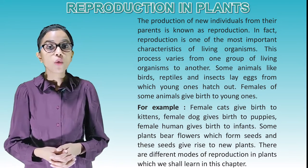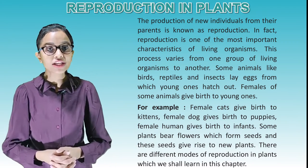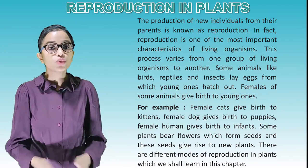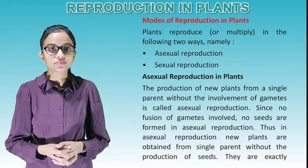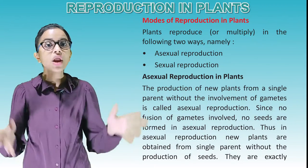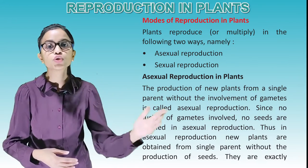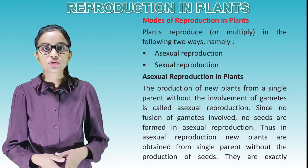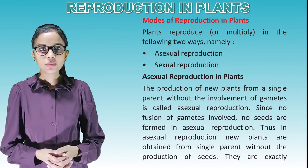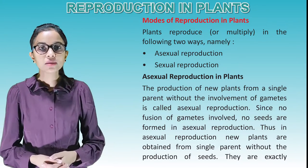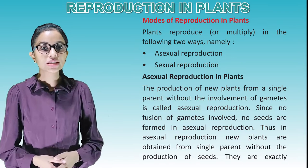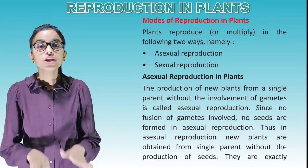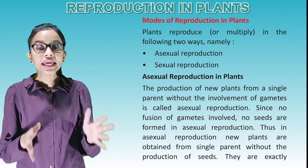Some plants bear flowers which form seeds, and these seeds give rise to new plants. There are different modes of reproduction in plants which we shall learn in this chapter. Plants reproduce or multiply in two ways: asexual reproduction and sexual reproduction. The production of new plants from a single parent without the involvement of gametes is called asexual reproduction. Since there is no fusion of gametes involved, no seeds are formed in asexual reproduction.